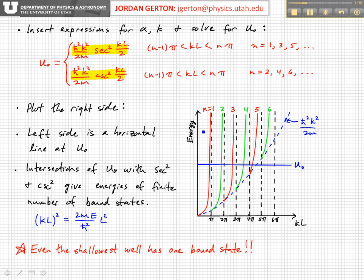I haven't labeled this, so we're talking very qualitatively here. Then what we find is that we have one. So every time that we have an intersection, that corresponds to a bound state. We have one, two, three, four, five bound states in this case.